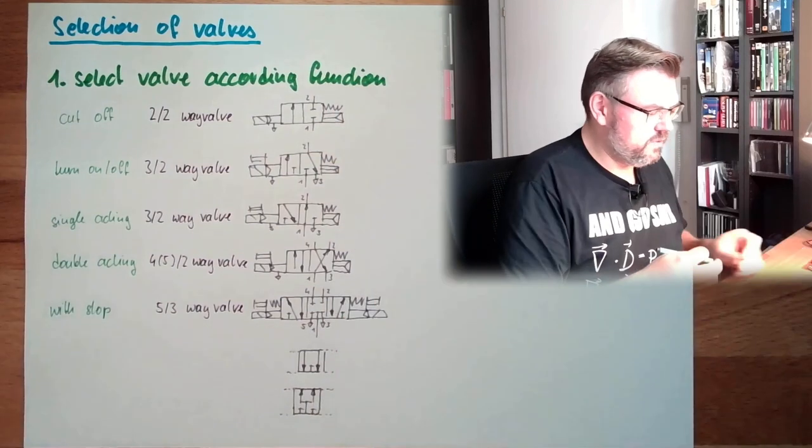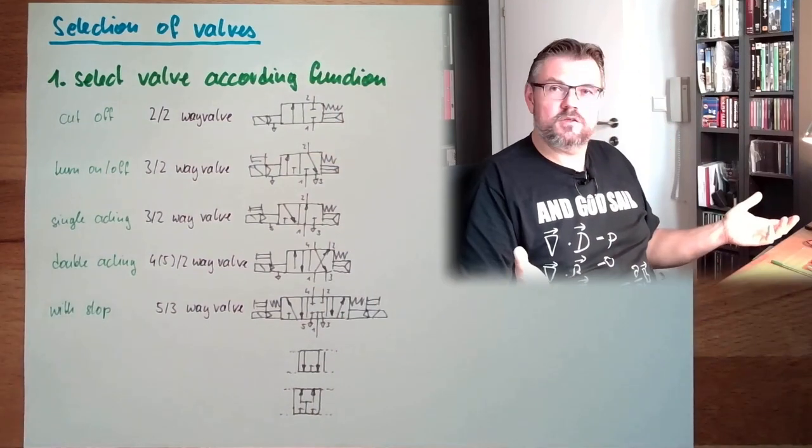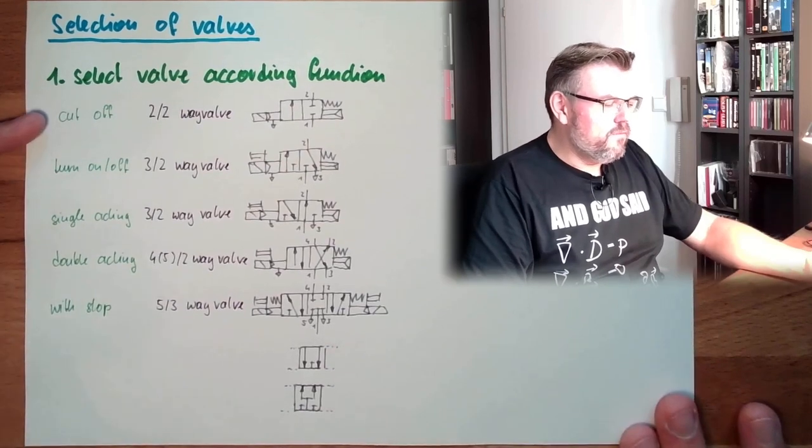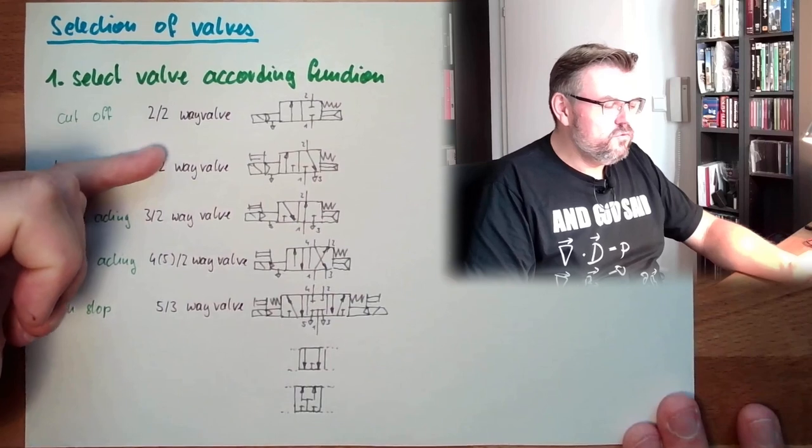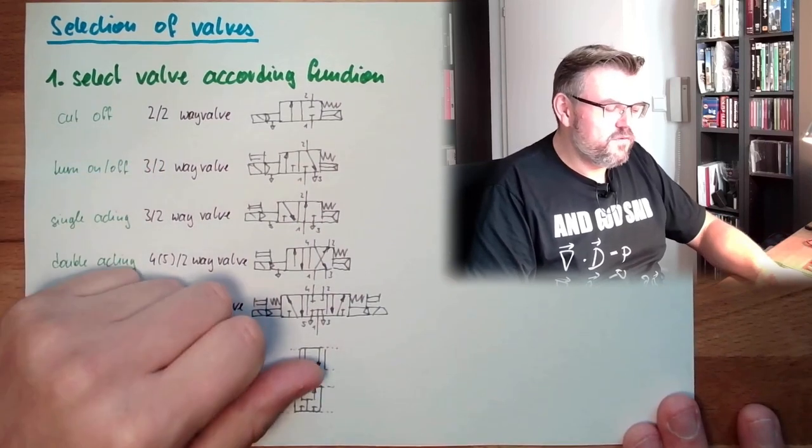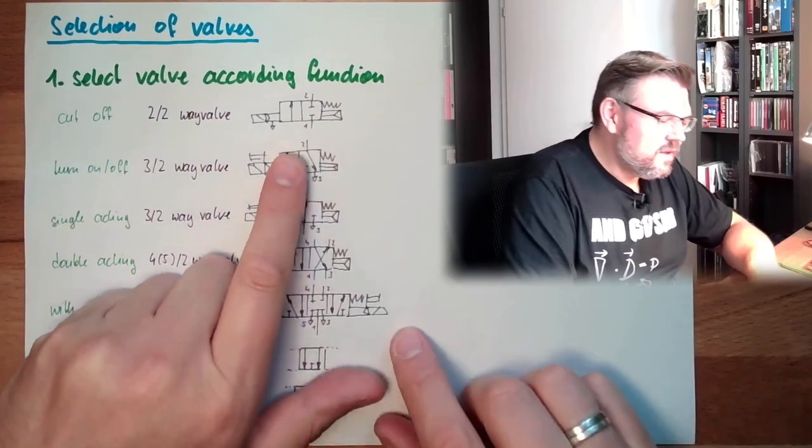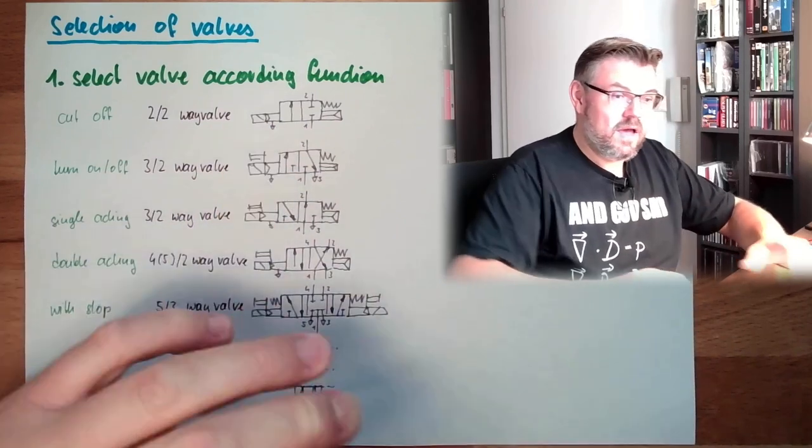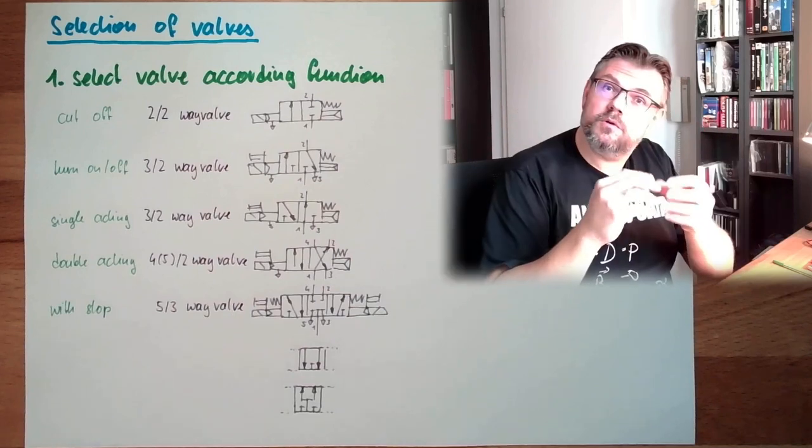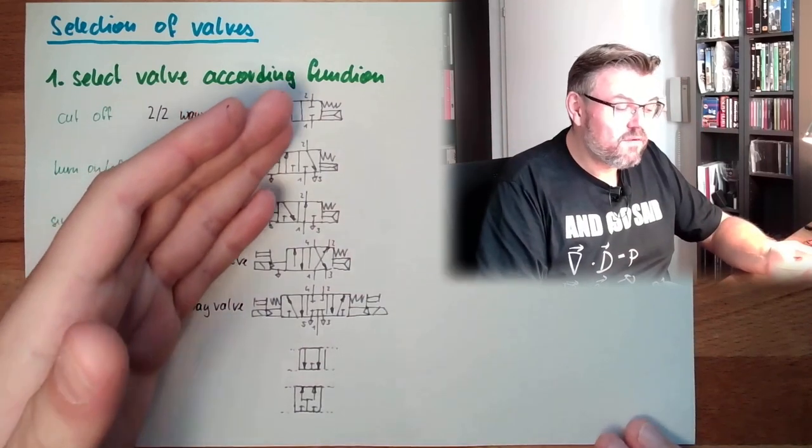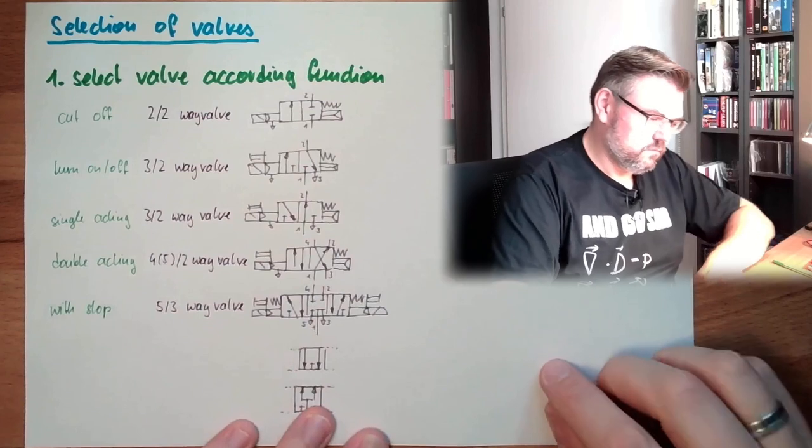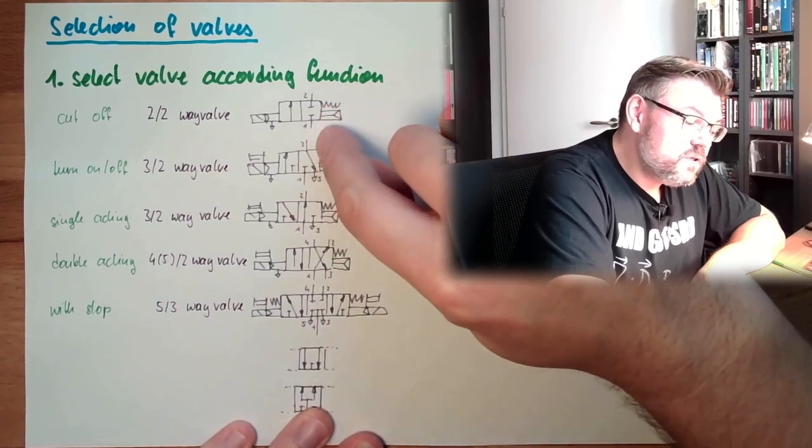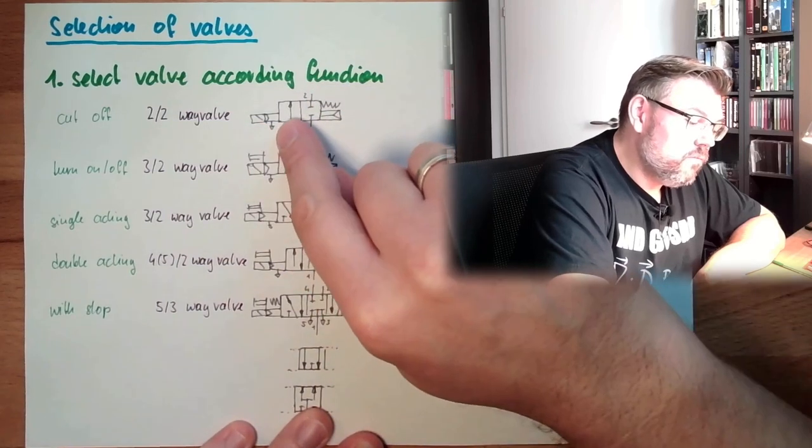I have already put here some possible functions. If you want to just cut off the stream, then a 2/2 way valve would be sufficient. And here we see, we said usually these valves are pre-controlled, so that we don't have a coil which is that big. We have a tiny coil switching a tiny valve, this tiny valve is switching the big valve. So this is spring loaded here, rest position locked, turn on, flow.